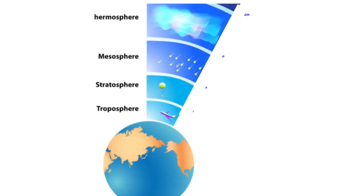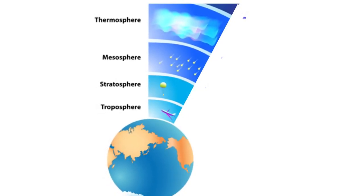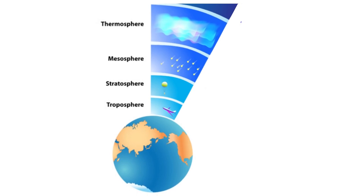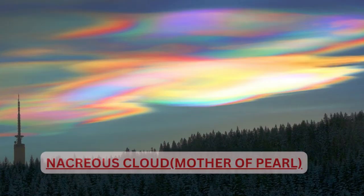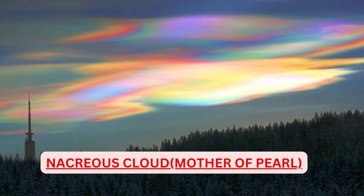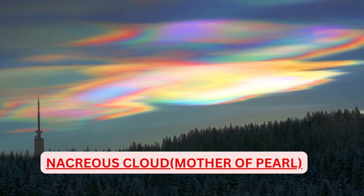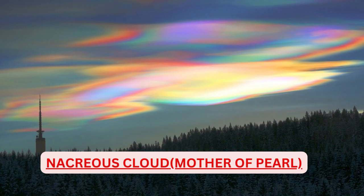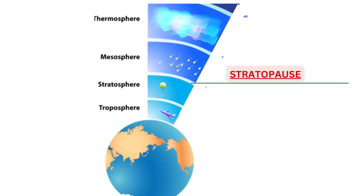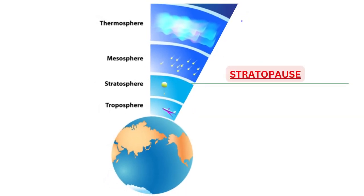Any atmospheric region where temperature is either stable or increases with height — also called inversion — is a stable region. Sometimes nacreous clouds, also called mother of pearl clouds, are seen in the upper stratosphere at higher latitudes in winters. Stratopause is the upper boundary of stratosphere.